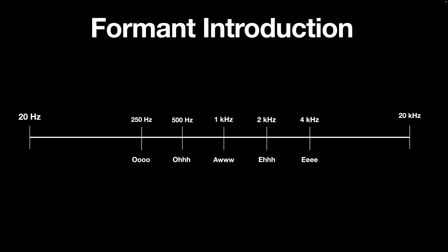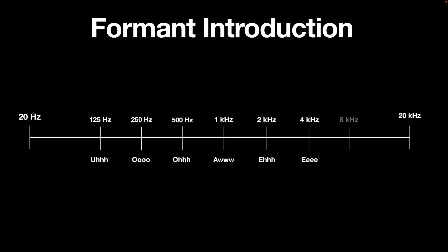But there are two more very recognizable sounds that extend the range of this exercise. At 125 hertz, we have the UH sound — kind of like the vocal fry register or the sound of gargling, like when somebody is not picking up their voice. And finally, way up at 8000 hertz, 8 kilohertz, we have the S sound. Ssss, which is often associated with sibilance and cymbal detail.